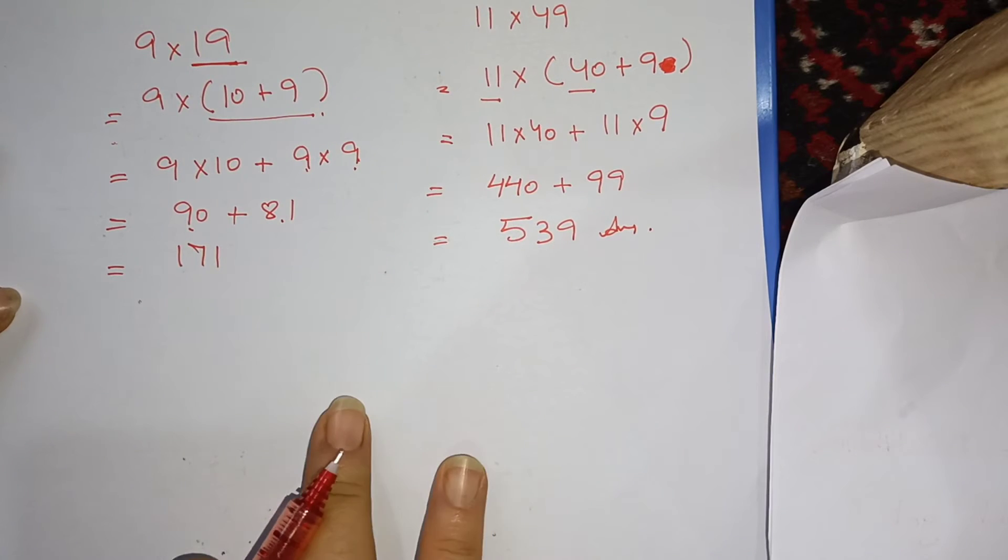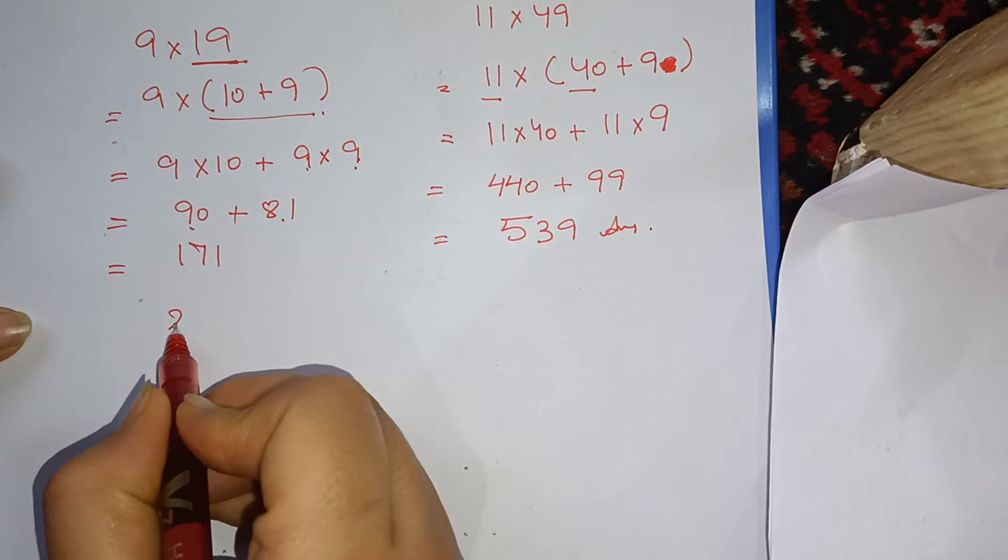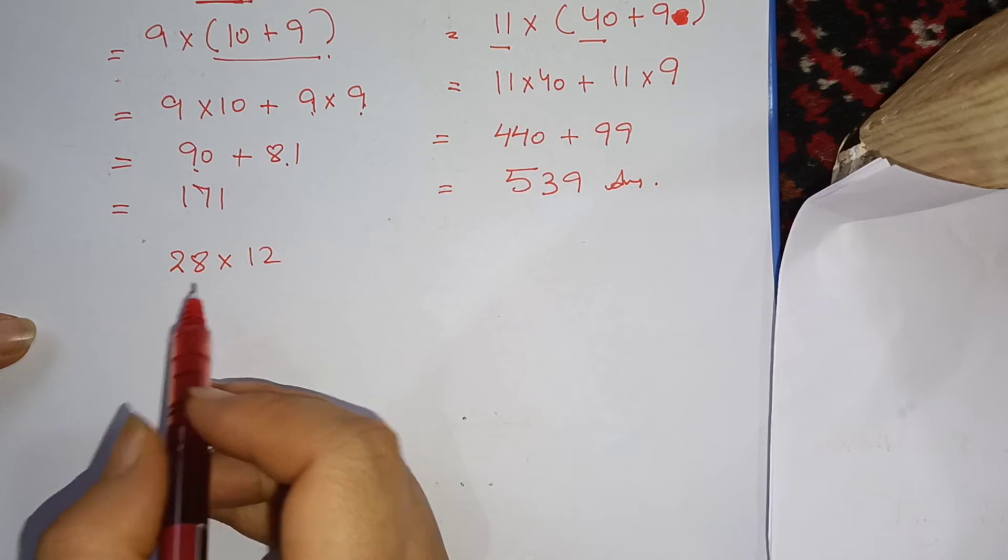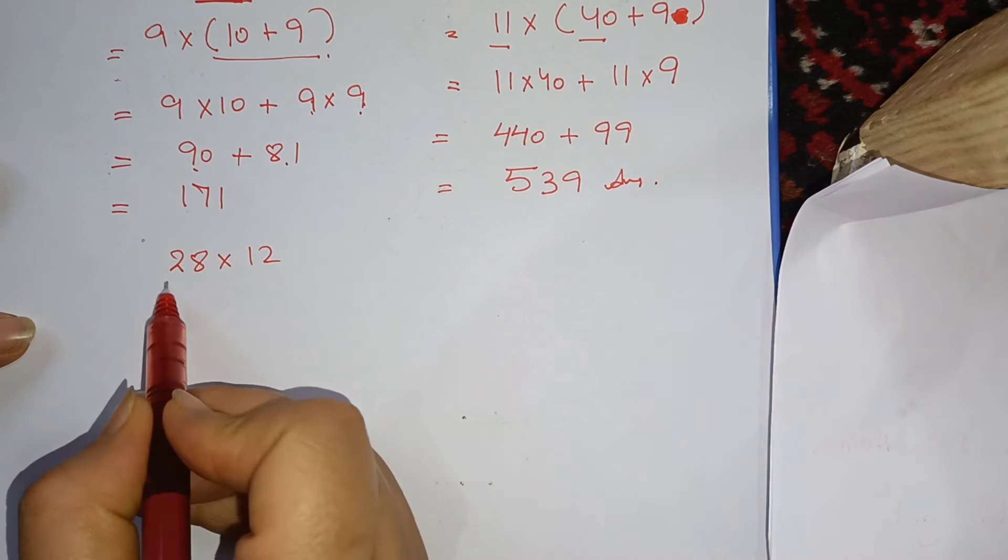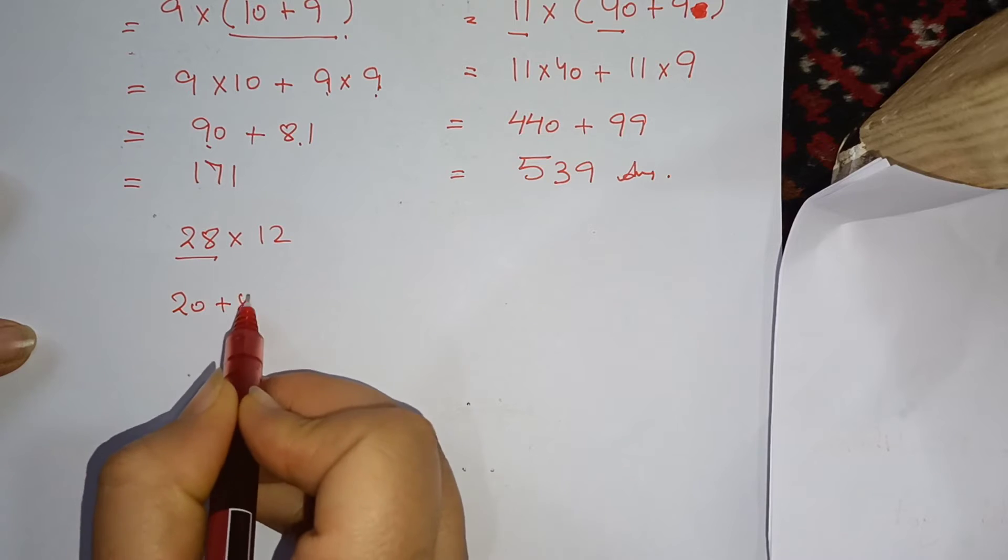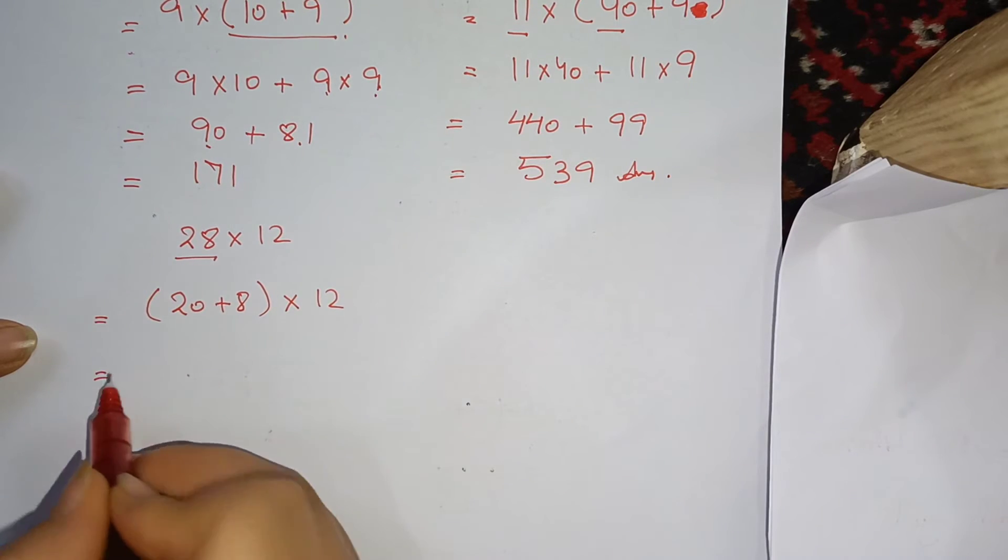Let's take another example. Suppose you have 28 into 12. If we change the number to big numbers, we will do 28 as 20 plus 8 into 12. This will be the same step.